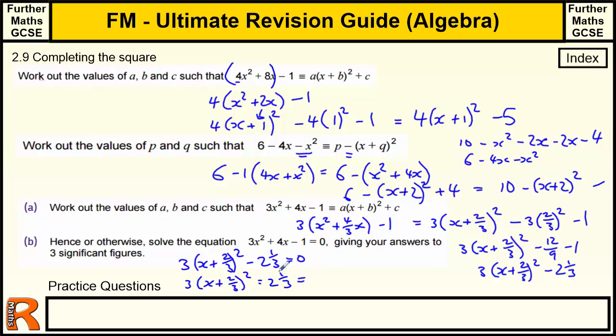Well, 2 and 1 third. I should have really left that as a top of every fraction. 6 is 7 thirds. Divide by the 3 makes 7 ninths. So divided by 3 is just times by a third, which is 7 over 9. Then we've got to square root that. So we've got x plus 2 thirds is plus or minus the square root of 7 over 9. I'm running out of space now. So x equals minus 2 thirds plus or minus the square root of 7 over 9. And it's asking to give your answer to three significant figures. So we just put that into the calculator.